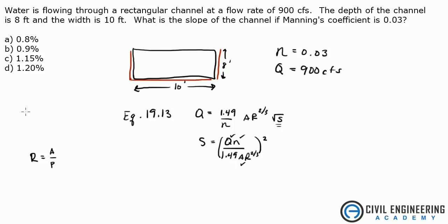So if we're going to solve this, we already know the area. That's just 8 times 10. That's 80 feet squared divided by the perimeter, which is 8 plus 10 plus 8. What does that give you? It gives you 3.077. So now we know R, now we just need to plug in everything.